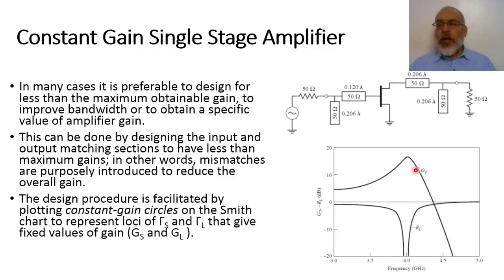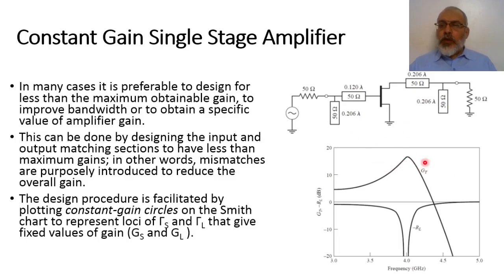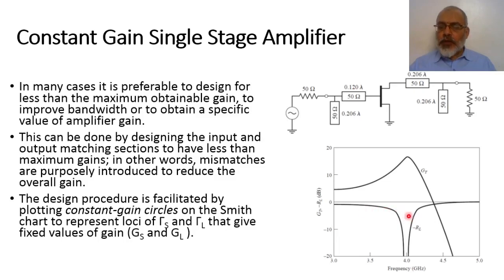To overcome this narrow band operation, we can reduce the gain from the maximum value. If we reduce the gain from the maximum value, we can obtain nearly constant gain over a wide band, and at the same time obtain a nearly constant reflection coefficient over a wide band. So in this lecture, we are going to talk about the constant gain single stage amplifier.